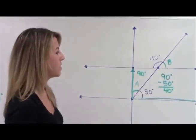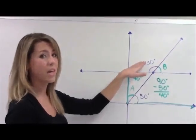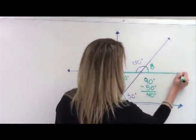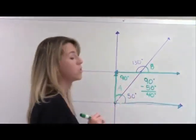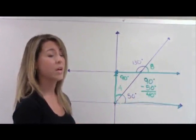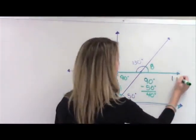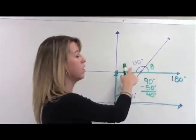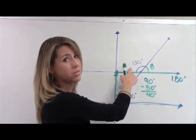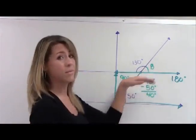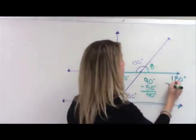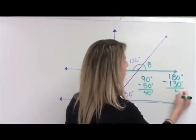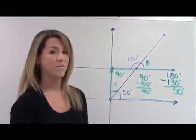If I look up here, I can see that angle B and this 130 degree angle are two angles combined that are making a straight angle. I know that straight angles always measure 180 degrees, and that makes angle B and this 130 degree angle supplementary angles. To find the unknown measure of angle B, I can subtract 180 degrees minus 130 degrees, to find that angle B is going to measure 50 degrees.